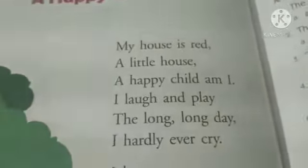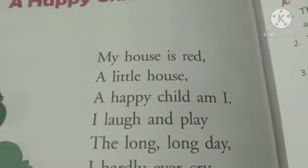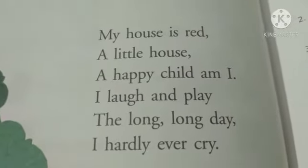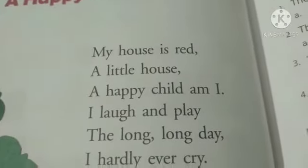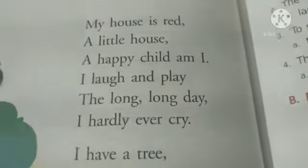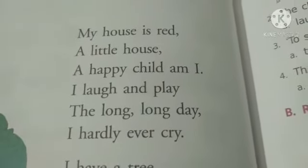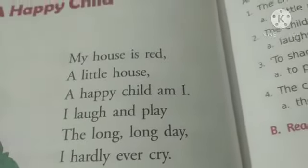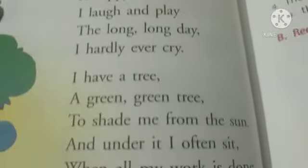Now we'll read the poem: 'My house is red — a little house, not a big house, it is a little house. A happy child am I because I have a house. My house is red, I have a little house, I'm happy. I laugh and play the long long day. I hardly ever cry.' He says: I never cry, I am always happy.